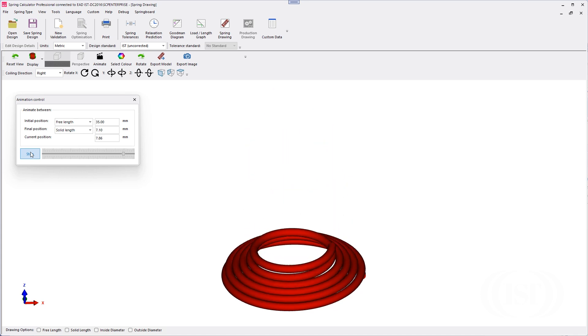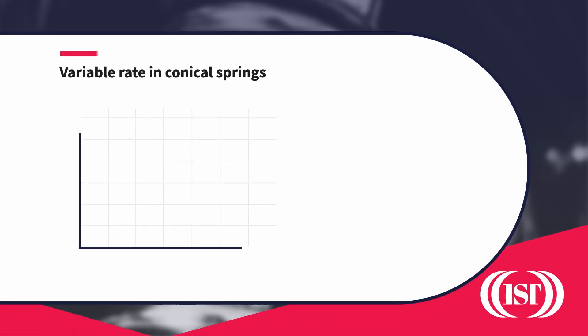That means they close up, reducing the number of active coils and increasing the overall spring stiffness. This leads to a gradually increasing rate after the initial linear part of the travel.